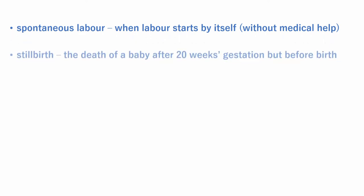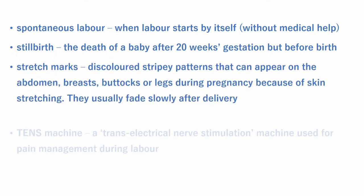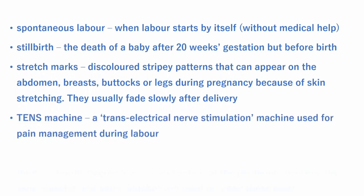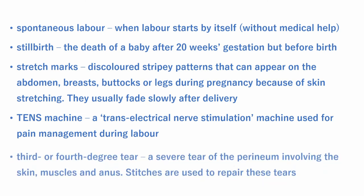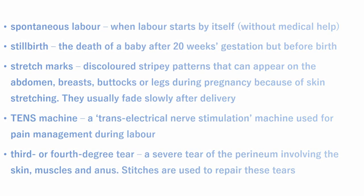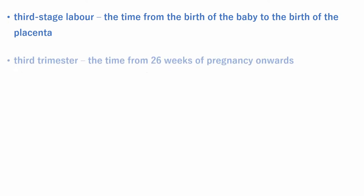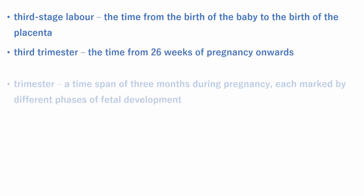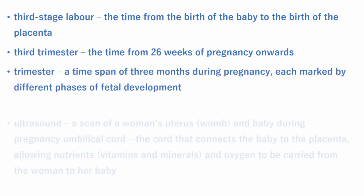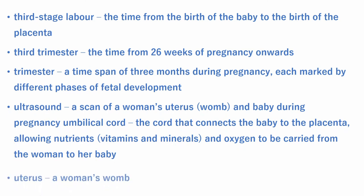Spontaneous labor is when labor starts by itself without medical help. Stillbirth is the death of a baby after 20 weeks of gestation but before birth. Stretch marks are discolored streaky patterns that can appear on the abdomen, breasts, buttocks, or legs during pregnancy due to skin stretching; they usually fade slowly after delivery. TENS machine (transcutaneous electrical nerve stimulation) is used for pain management during labor. Third or fourth degree tear is a severe tear of the perineum involving the skin, muscles, and anus; stitches are used to repair these tears. Third stage of labor is the time from the birth of the baby to the delivery of the placenta. Third trimester is from 26 weeks of pregnancy onwards. Trimester is a time span of three months during pregnancy marked by different phases of fetal development. Ultrasound is a scan of a woman's uterus and baby during pregnancy. Uterus is a woman's womb.